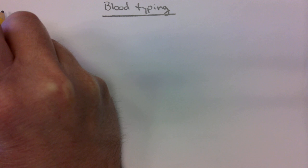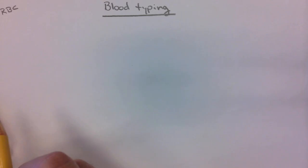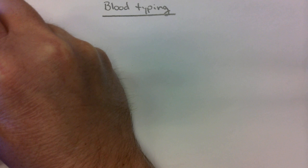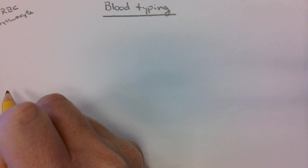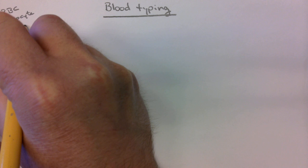Let's talk about blood typing. When we're looking at blood typing, we're going to look at two different parts. We're going to look at the red blood cell, the RBC, otherwise known as the erythrocyte. Those are one of the formed elements in blood. And we're also going to look at the plasma antibodies.